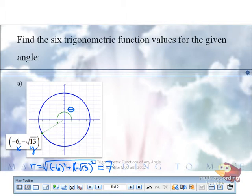So sine of theta would be y over r. What's our y? Negative square root of 13 over r, r? Seven. We don't have to clean that up because the radical is upstairs. It doesn't reduce.